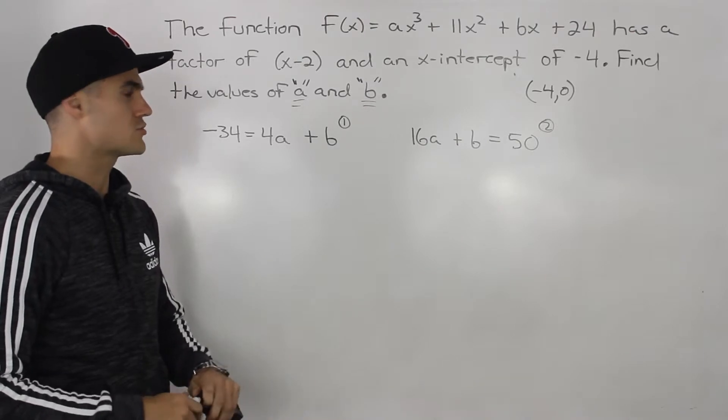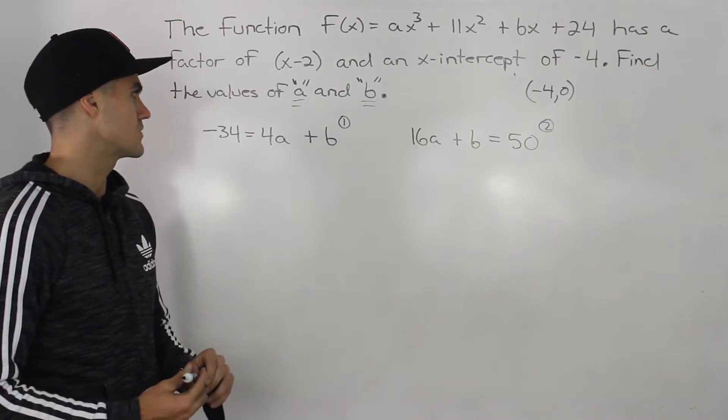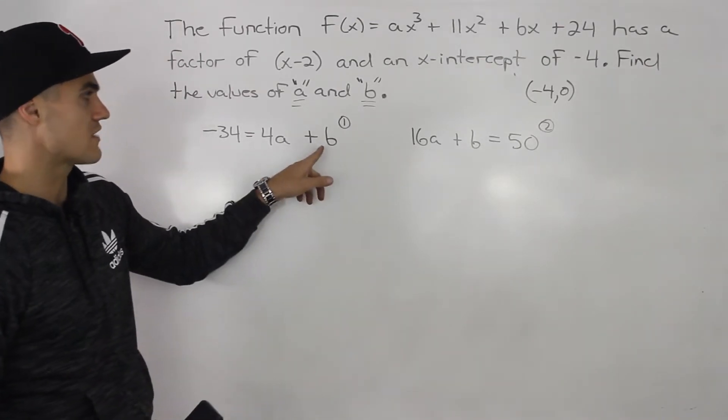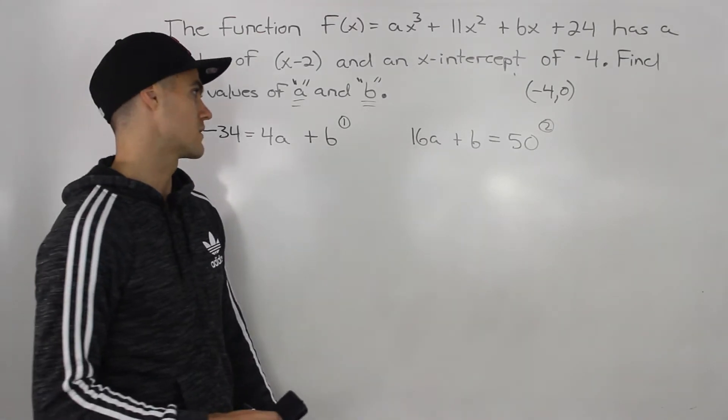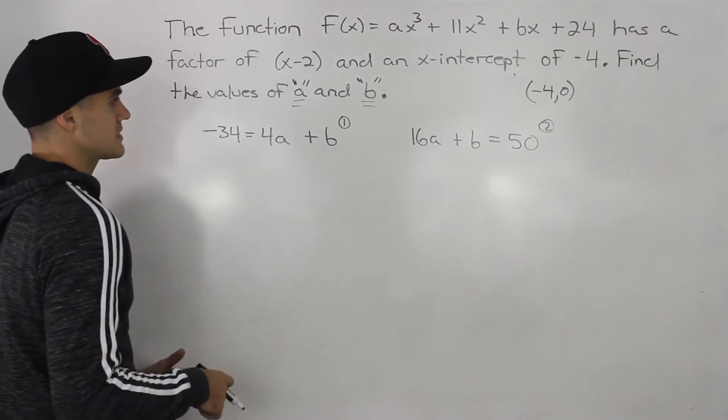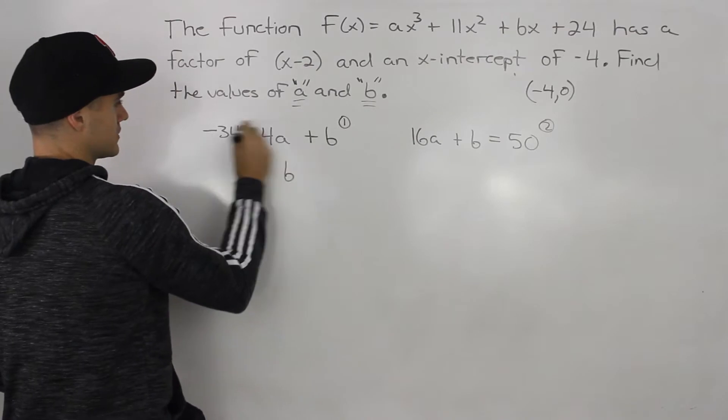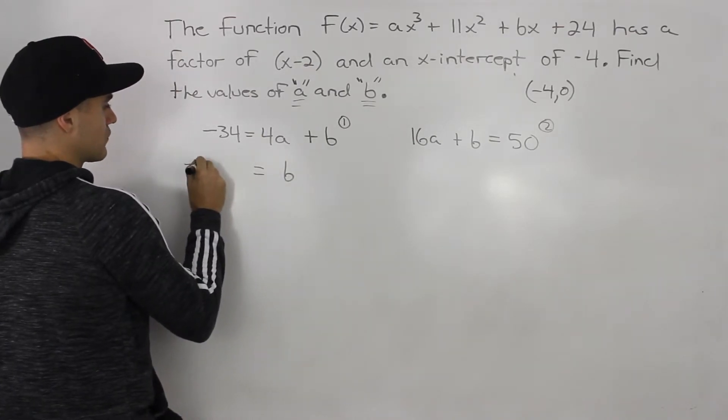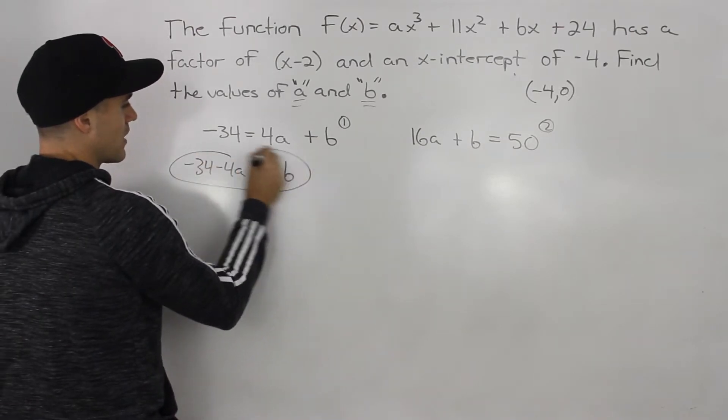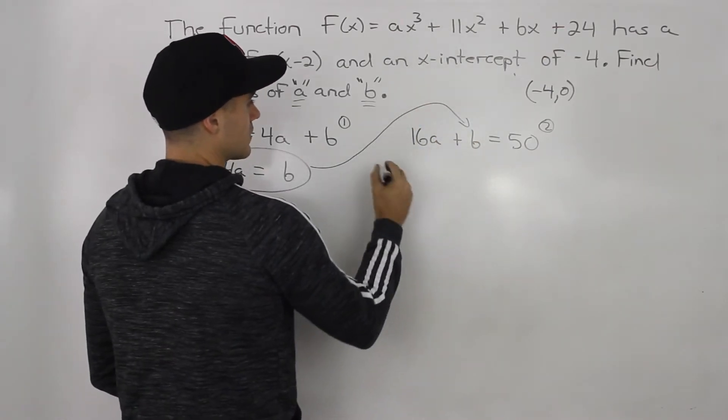So writing those two equations up here, we can do substitution or elimination to solve for these a and b values. I would suggest doing substitution. I prefer always doing substitution, especially if I have variables like this that are by themselves. So what I'm going to do is I am going to isolate for the b in equation 1 here. So I'm going to keep the b on the right side, bring this 4a over. So I'll have negative 34 minus 4a. So b equals negative 34 minus 4a.